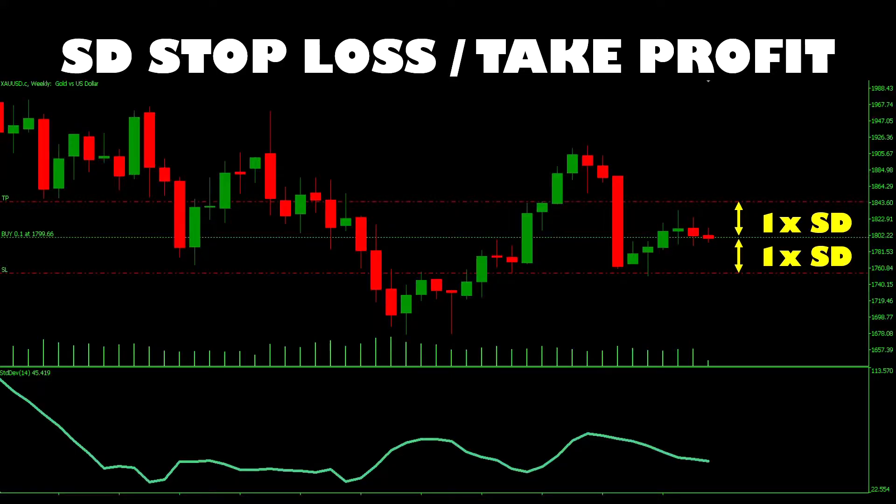So here in our example, for all of that, if we enter this buy trade where our green line is and we're going with one times standard deviation for both take profit and stop loss levels, which are marked there in the red dotted line, that is the distance that we get to work with for the trade before it gets cut off one way or another.